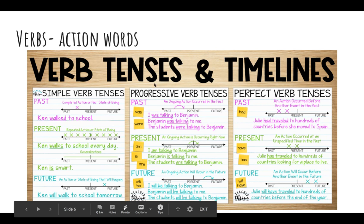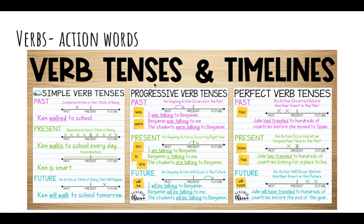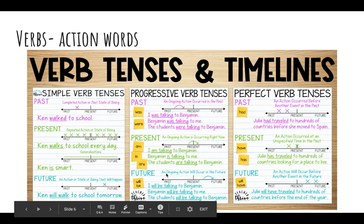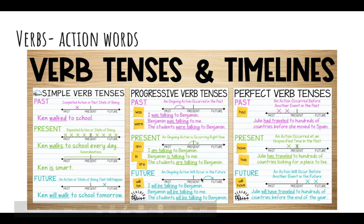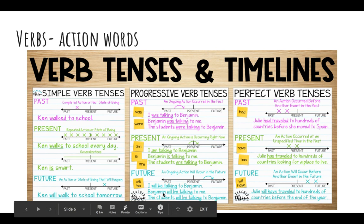Progressive verb tense — past progressive is an ongoing action that occurred in the past: 'I was talking to Benjamin,' 'Benjamin was talking to me,' 'The students were talking to Benjamin.' Present progressive is an ongoing action occurring right now: 'I am talking to Benjamin,' 'Benjamin is talking to me,' 'The students are talking to Benjamin.' Future progressive is an ongoing action that will occur in the future: 'I will be talking to Benjamin,' 'Benjamin will be talking to me,' 'The students will be talking to Benjamin.'